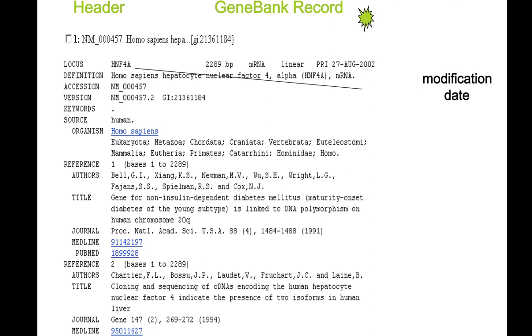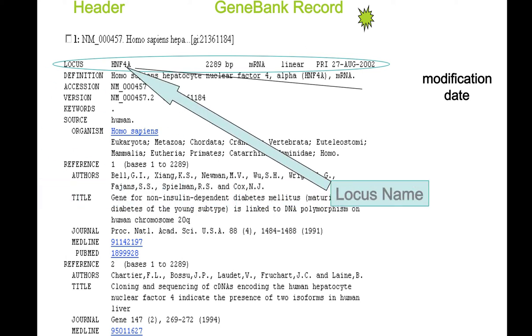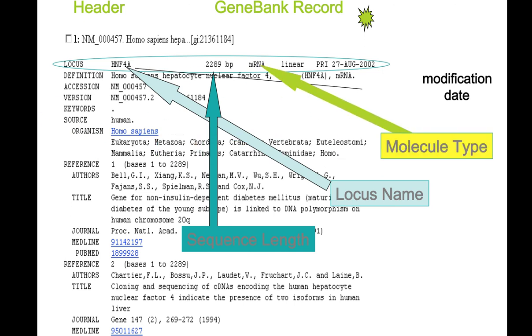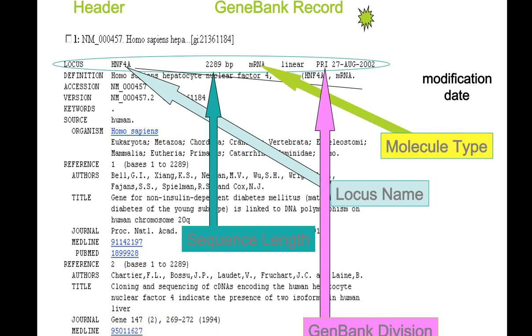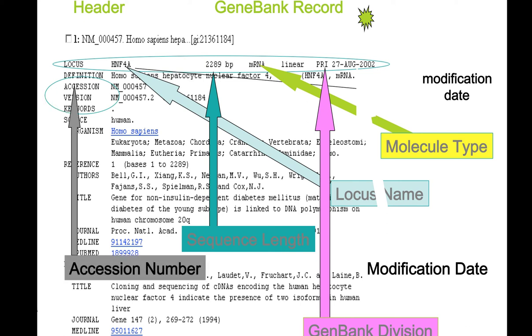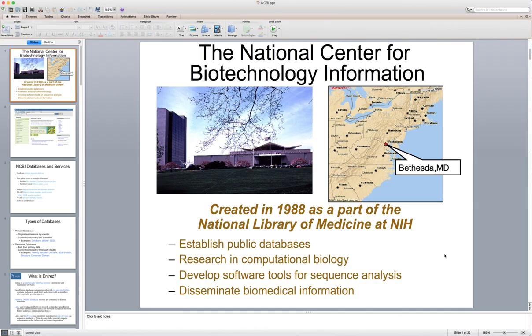One more time I would like to review the GenBank records. As you see, the locus name is right on the top. I need to mention there's also the modification date on the right. This is the locus name, sequence length, molecular type, GenBank division, modification date — accession number never changes, version number can change, don't forget. And that concludes this lecture. In the next lecture, we're going to explore together how we can navigate ourselves in NCBI. Thank you very much for your attention. Bye.